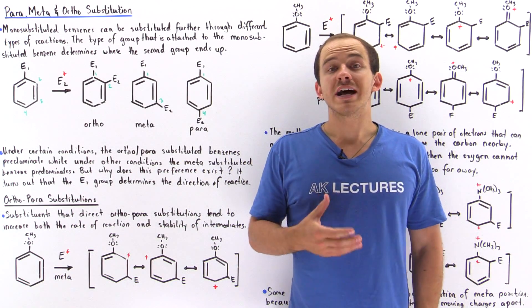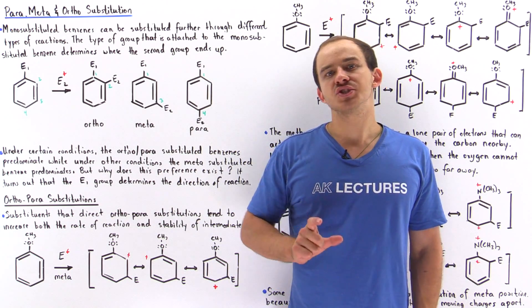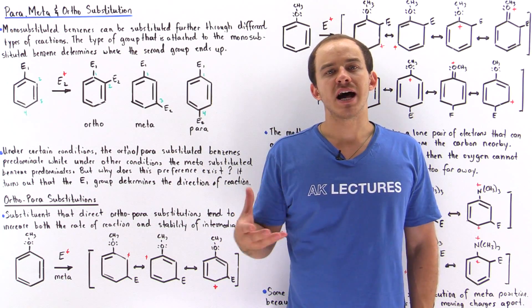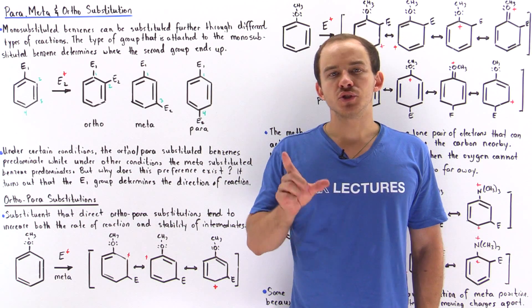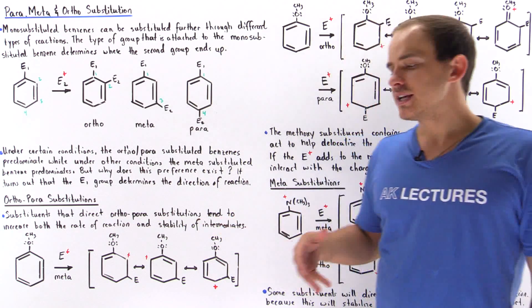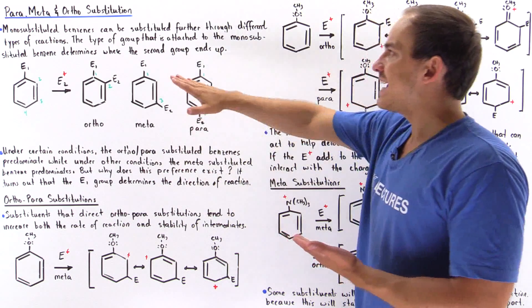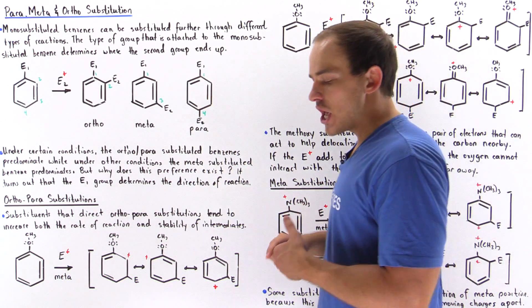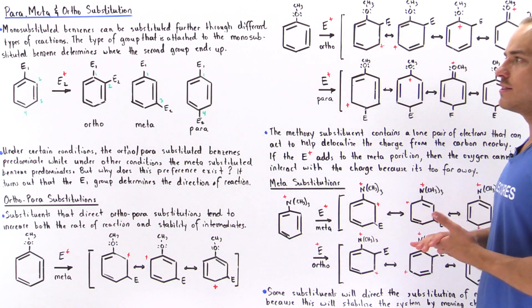Whenever benzene molecules undergo electrophilic substitution reactions, one of the H atoms attached to a carbon on the benzene is replaced by some type of substituent. That product is called a monosubstituted benzene. It turns out that monosubstituted benzenes can be further substituted through different types of reactions, and these di-substituted benzenes are what we're going to discuss in this lecture.